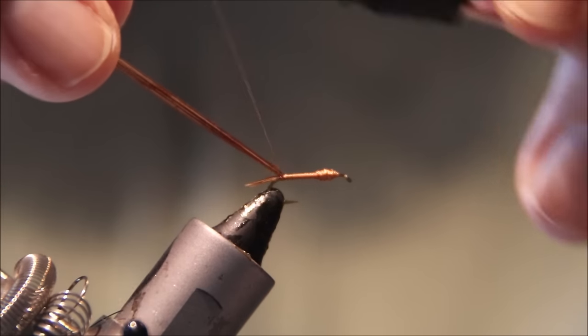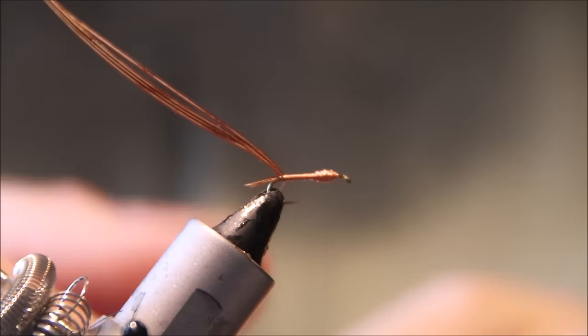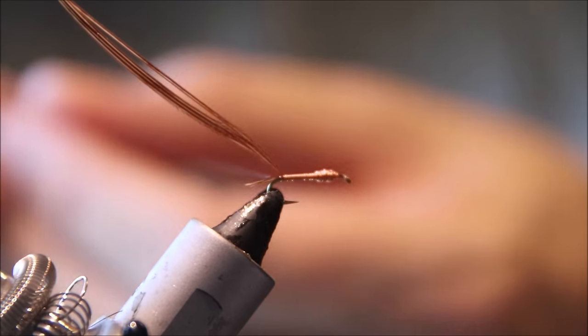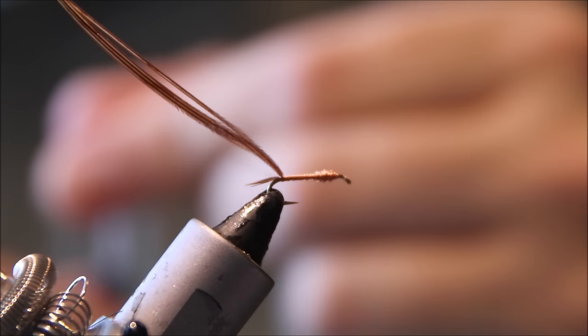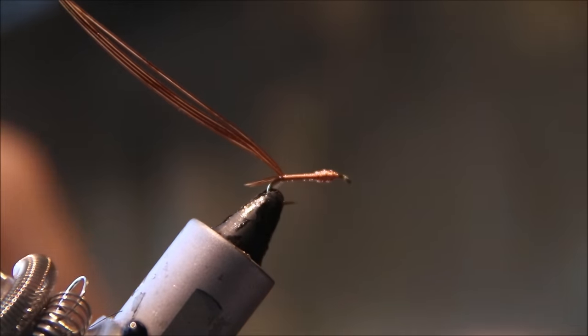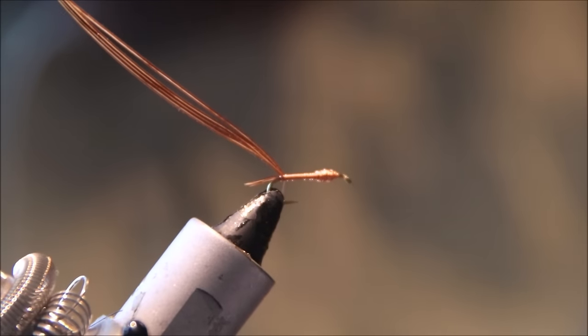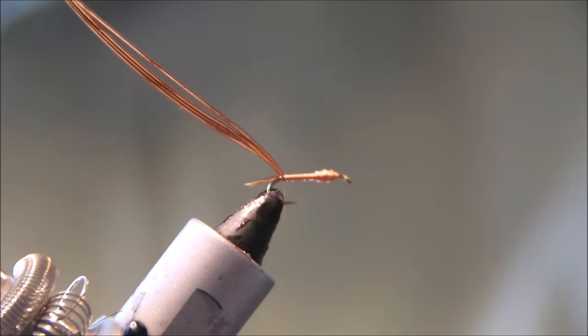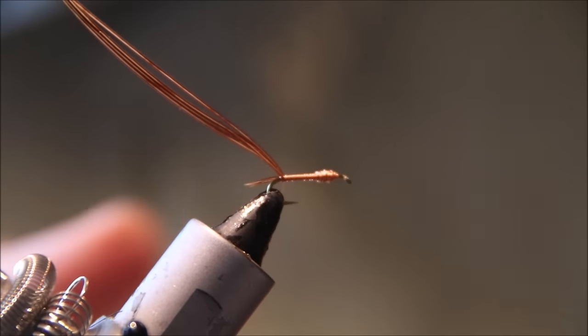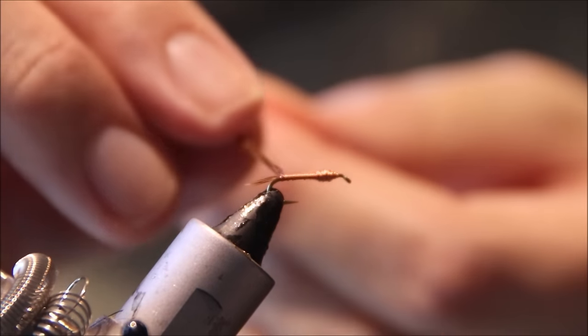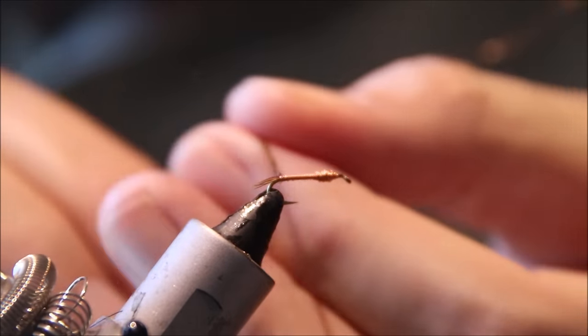You'll see it will kind of kick up. Then one in front. Now at this stage, I'll run off eight to ten inches of wire off the bobbin and just snap it. This leaves me my working thread for the rest of the fly.